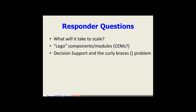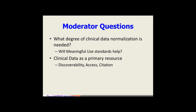Moving to Zach's slide — a simplistic summary and points of emphasis: to what degree of clinical normalization is needed, and will meaningful use standards help? Culturally within an organization, if we're going to achieve scalability and low cost for phenotyping, organizations and medical centers — as is starting to happen with accountable care organizations — need to think of clinical data as a primary resource rather than a byproduct of the care process. Concerns about comparability, consistency, or any mode of reusability are second or third tier in many organizations.